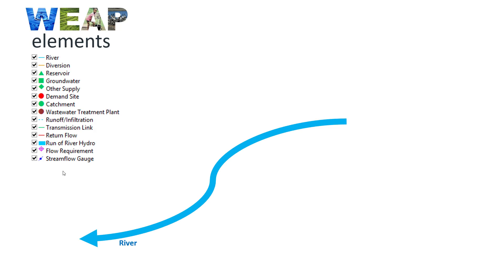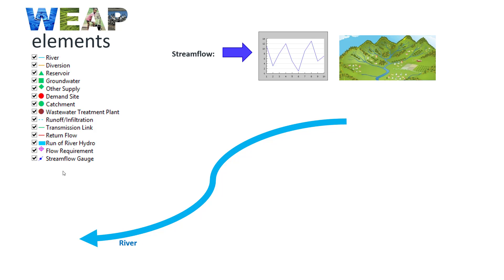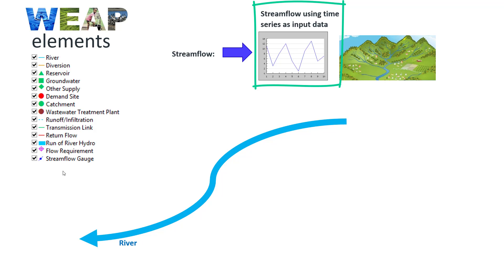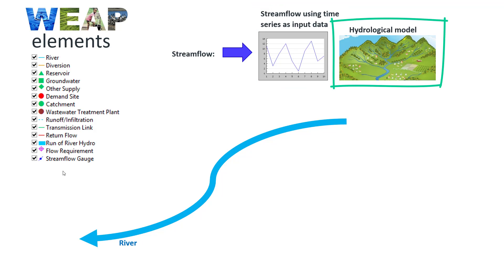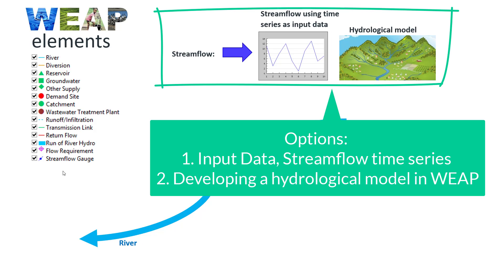The river element represents surface water, and it is necessary to assign or model the stream flow. We have two options: the first is using a stream flow time series simulated by any other hydrological model or estimated by another method — we can enter that time series to allocate the available flow in the river element. The second is building the hydrological model directly in WIP. Either method can be used to supply the available stream flow in the river element.